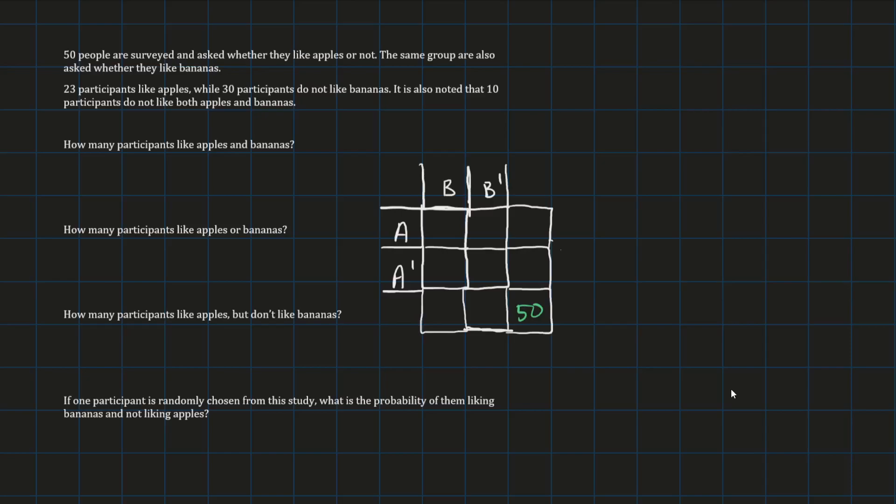Now, if we're doing a probability question, then this should be one because we know that all probabilities have to add up to one. Now, 23 participants like apples. A represents apples and A dash or A complement represents not liking apples. Obviously, not liking apples is the complement of liking apples. So 23 participants like apples. That means at the end of the A row, we'll put 23 in. If 30 participants do not like bananas, then we'll put 30 at the bottom of the B dash column because B dash or B complement represents not liking bananas. And 10 participants do not like both apples and bananas. So we put 10 in here because A dash represents not liking apples, B dash represents not liking bananas. And this grid spot is where they both overlap, i.e. the intersection.